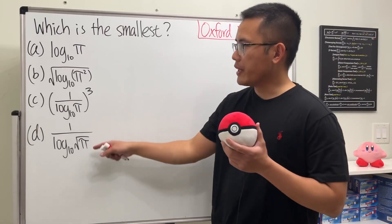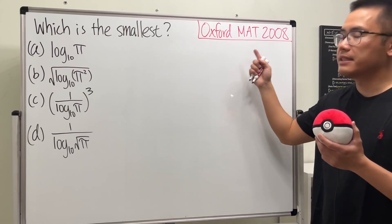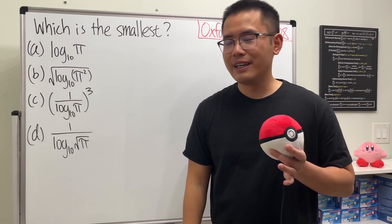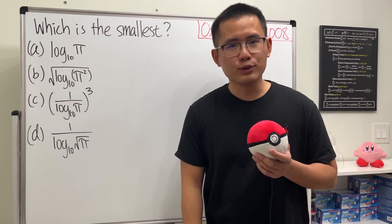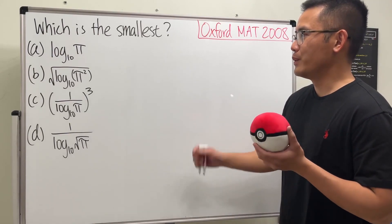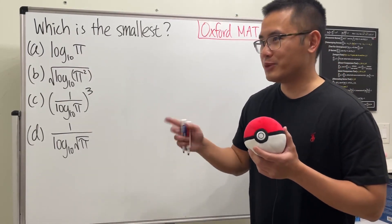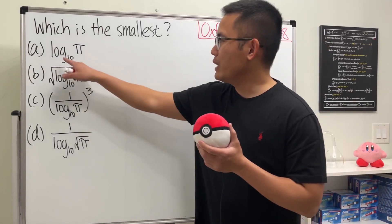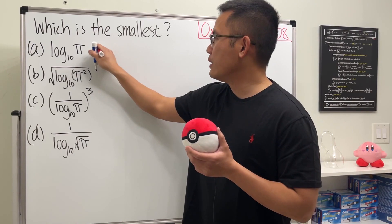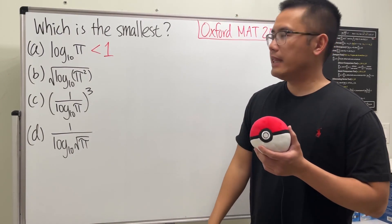We are going to find out which of these is the smallest. This is from the Oxford Math Admission Test in 2008. We will not be using a calculator, and we are also not going to be using calculus. First off, we know pi is about 3.14, so when we have log base 10 of that, we know for sure this is going to be less than one — keep that in mind.